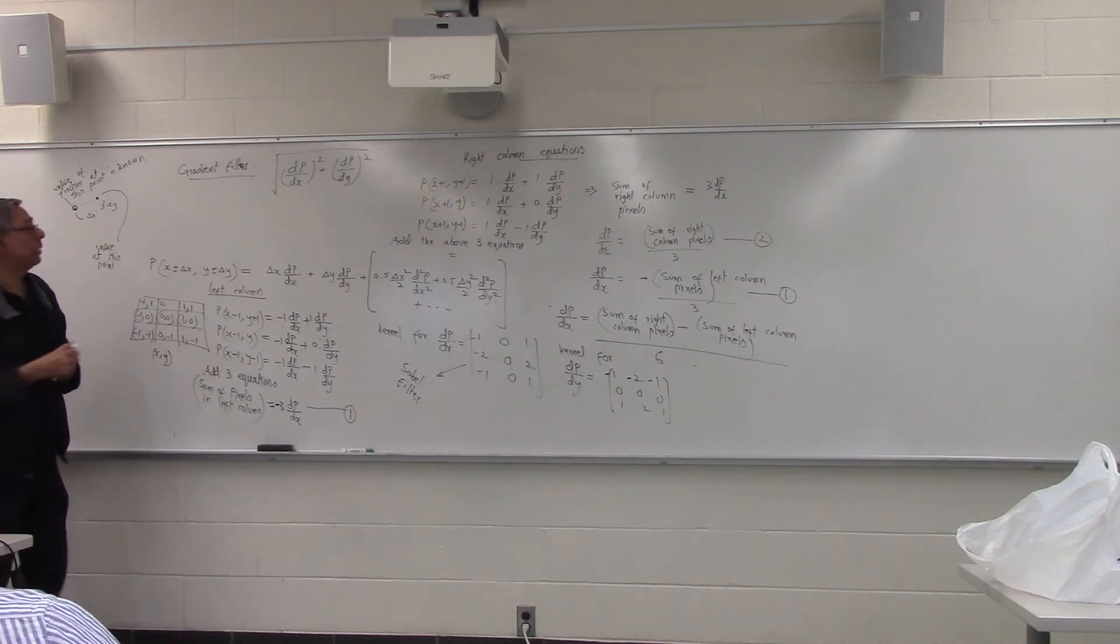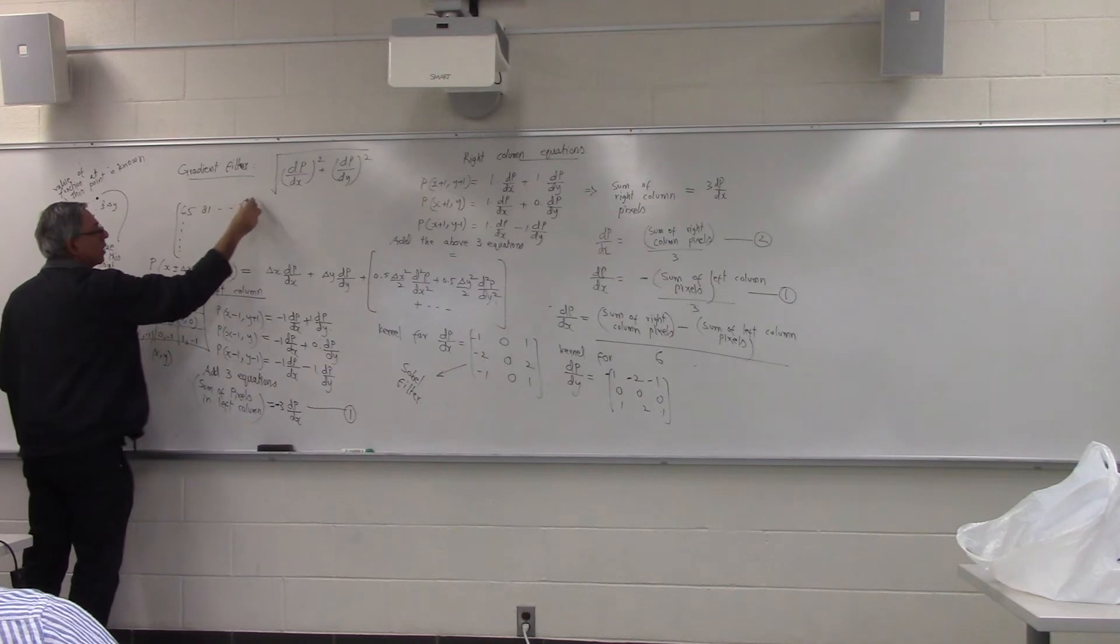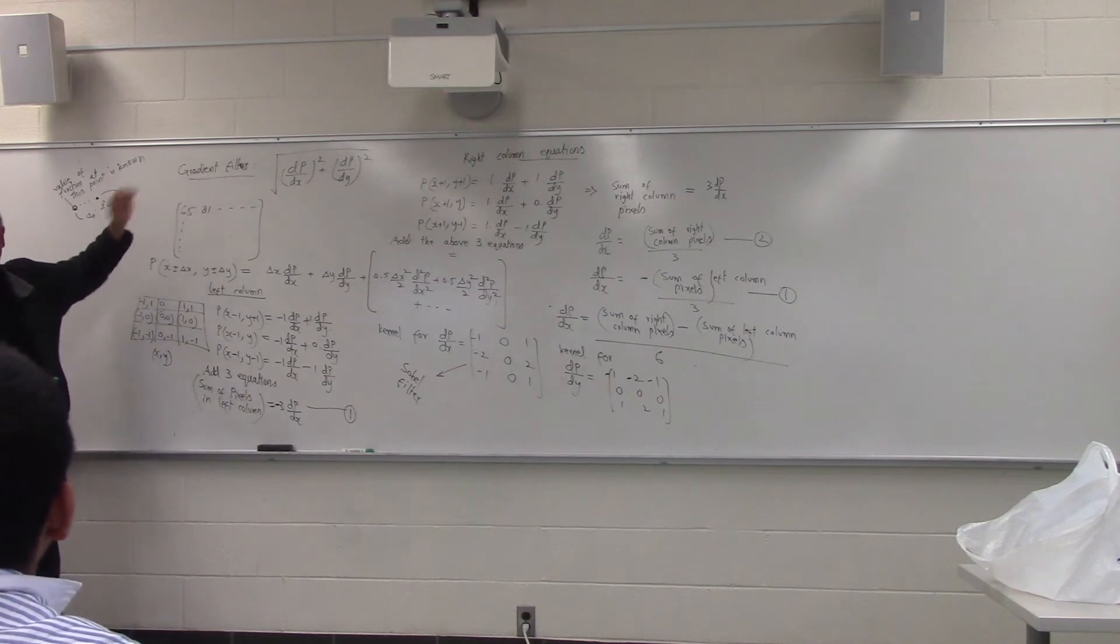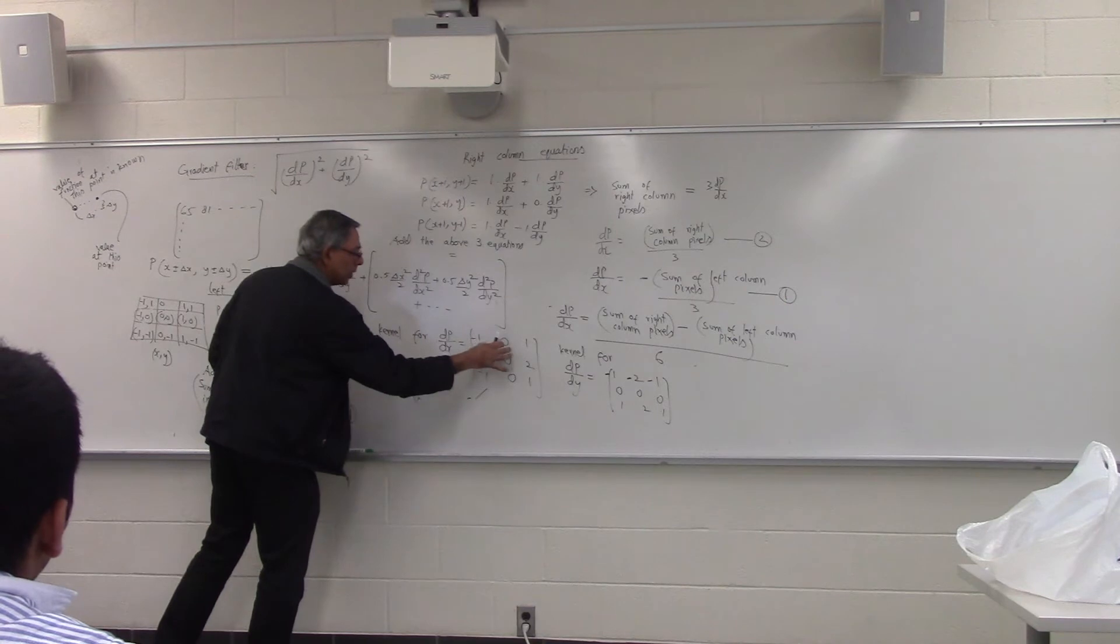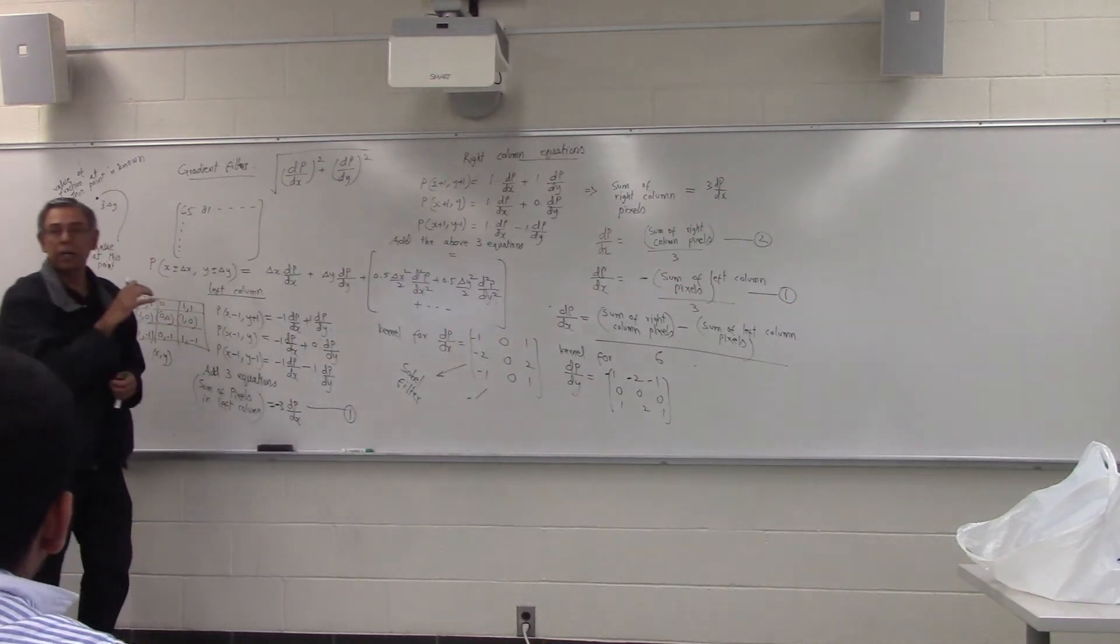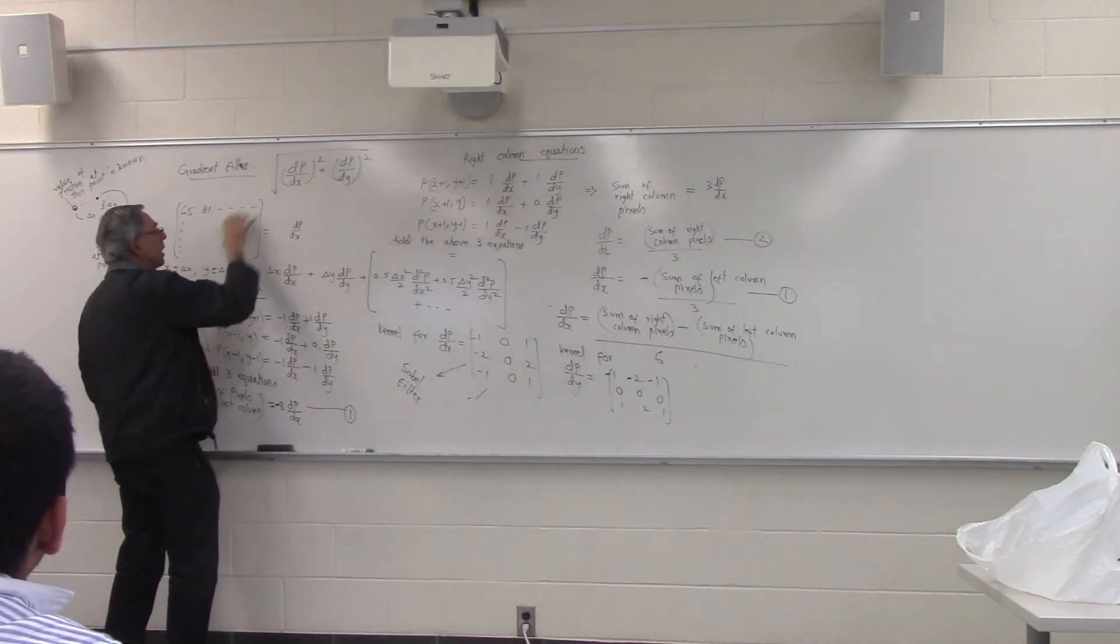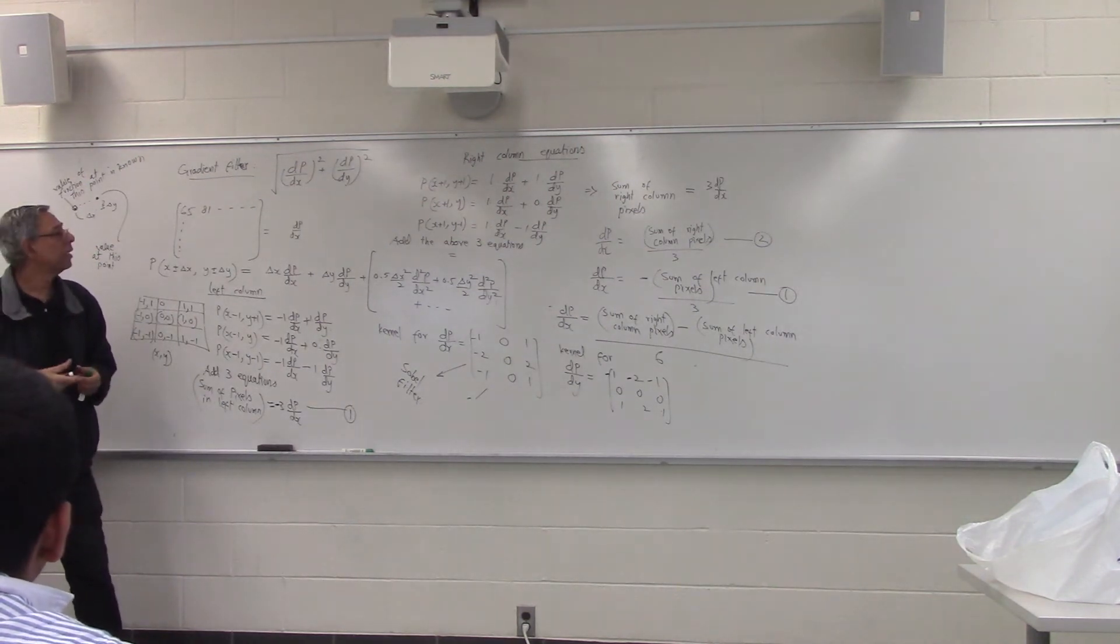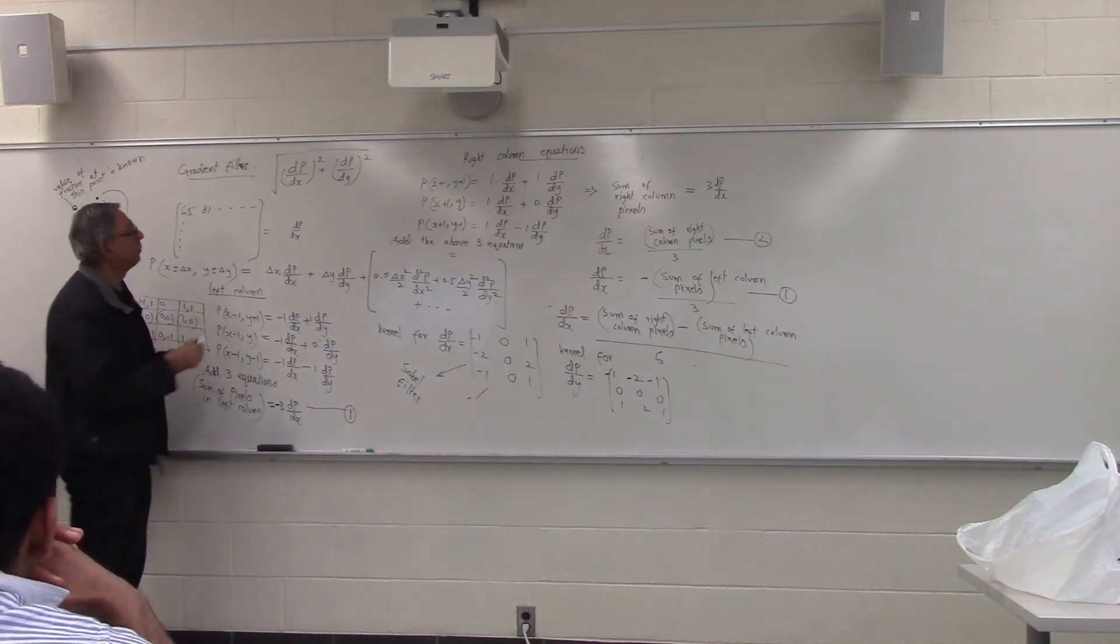So suppose I gave you an image. My question is, how will you compute this? How will you apply the gradient filter to the image? First, you will take this kernel. Then you will do a convolution of this with this one. And that will give you the image. Whatever the result of the convolution is, it will give you dp over dx image. Then you will apply the second kernel over here, dp over dy. And what will that give you? dp over dy.